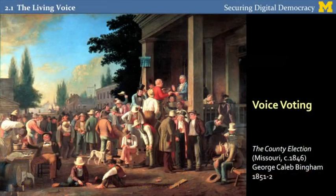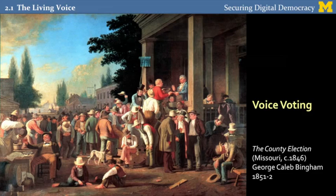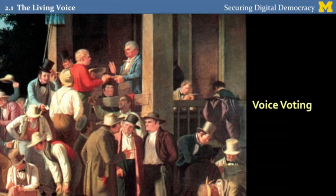We can get a sense for this voting method by looking at this painting. This captures it pretty well in all its glory and all its shame. This is called The County Election, and it's a painting by George Caleb Bingham. It depicts an election in the state of Missouri in 1846. Let's look at some of the details here and try to imagine yourself in the place of the voter for a minute. Here we see the voter in the red shirt walking up to the polling place. He stood in line, and now he's about to cast his vote. First we can see the authentication mechanisms in use. Here's the election judge, and he's going to swear in the voter.